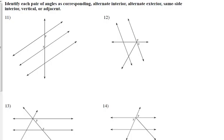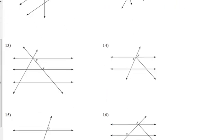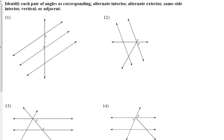I want you to practice here with 11 through 16. You need to identify those angles marked X and Y as either corresponding, alternate interior, alternate exterior, same side interior, vertical, or adjacent.